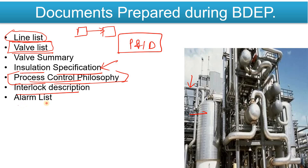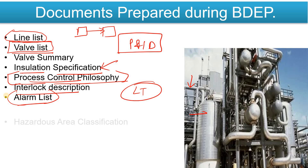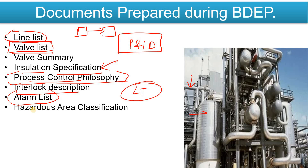The Alarm List documents each instrument's alarm setpoints — for example, if a level transmitter has alarms at high-high, high, low, and low-low levels, the Alarm List specifies at which point each alarm will trigger.